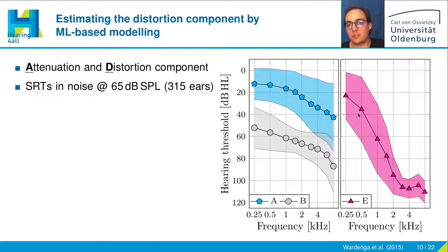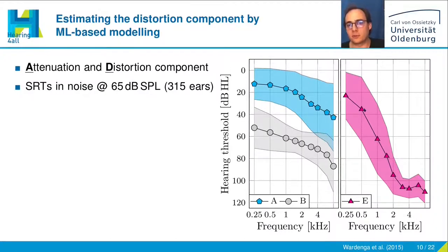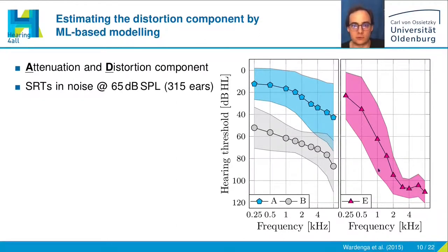Group E consisted of special cases with steeply sloping hearing losses — they were close to normal hearing for low frequencies but rather deaf for frequencies from 2 kHz upwards.